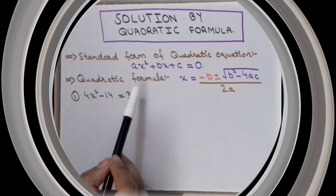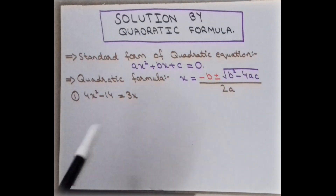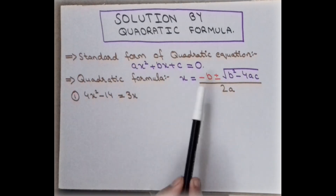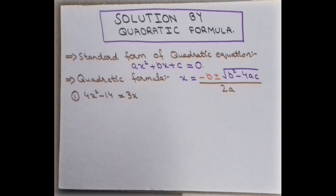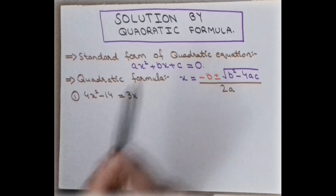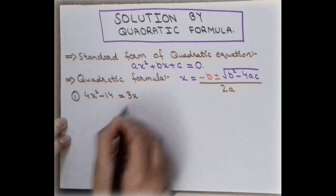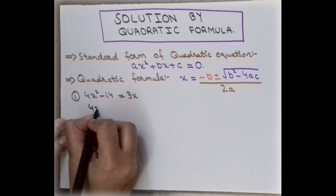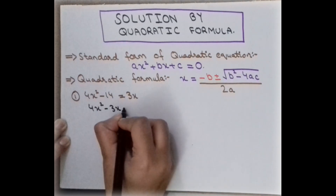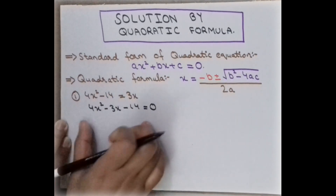Let us take an example. We have to find the solution of this equation. To solve the quadratic equation by this formula, we must make the equation in the standard form of the quadratic equation. So we can rewrite this equation as 4x² - 3x - 14 = 0. Now this equation is in the standard form.